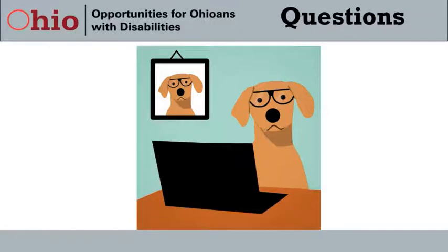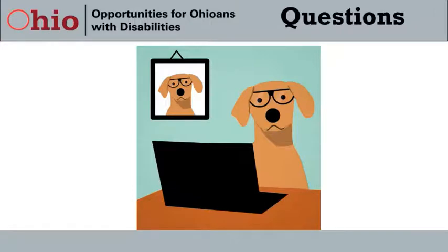Question: For the direct threat assessment, does the employee need to request the accommodation, or do employers need to be proactive if they know the employee has one of the listed medical conditions? This can happen either way. If an employee is aware of their condition and requests an accommodation, you begin the interactive process. You may also already know about the employee's condition through prior disclosure or previous accommodation requests, and if you have reason to believe the person might pose a direct threat to their own health, you can be proactive and follow the EEOC criteria for that assessment.